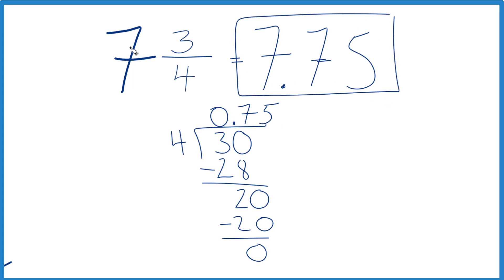So in answer to our question, the fraction seven and three-fourths equals the decimal 7.75. It's Dr. B. Thanks for watching.